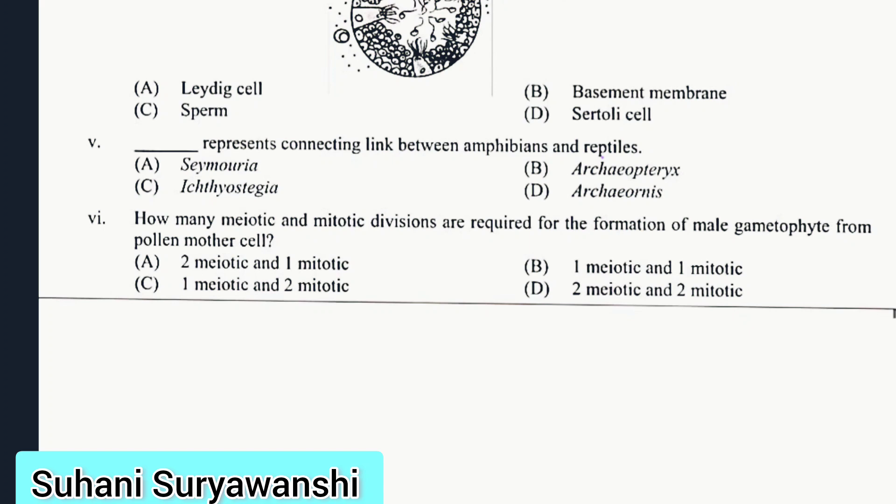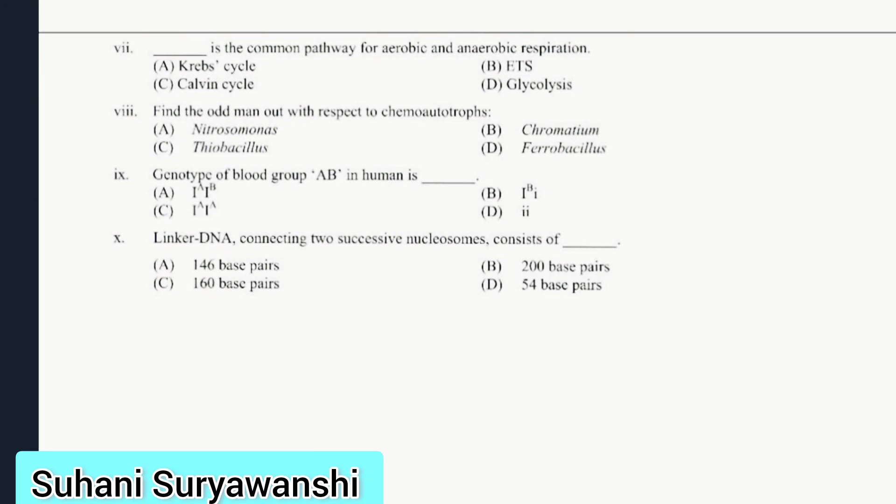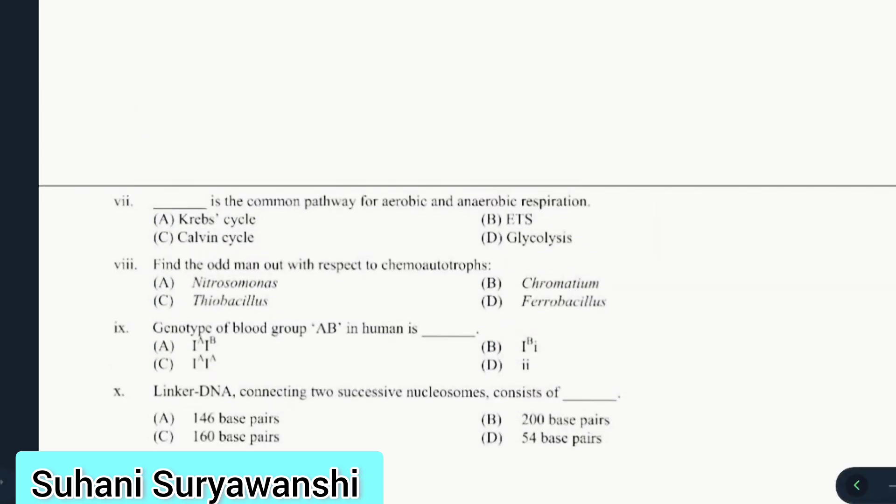Question 7: Blank is common pathway for aerobic and anaerobic respiration. Answer is glycolysis. Question 8: Find the odd man out with respect to chemo autotrophs. Answer is chromatium. Question 9: Genotype of blood group AB in human is IA IB. Question 10: Linker DNA connecting two successive nucleosomes consists of 54 base pairs. This completes year 2020 questions.